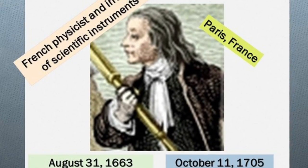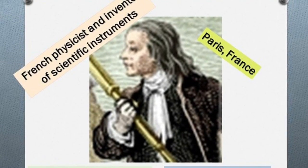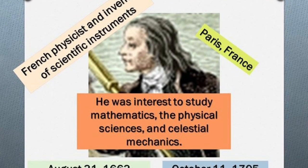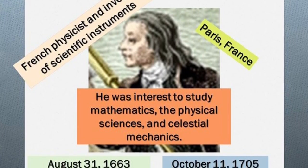As mentioned before, he was a French physicist therefore he lived in Paris, France. He was interested to study mathematics, the physical sciences, and celestial mechanics.